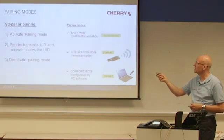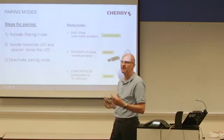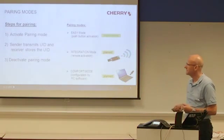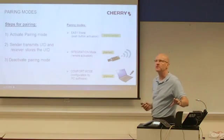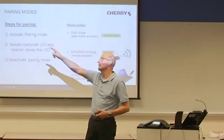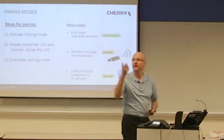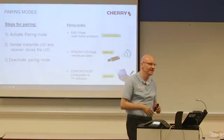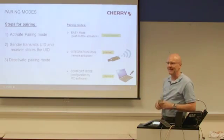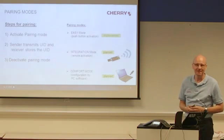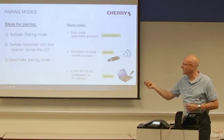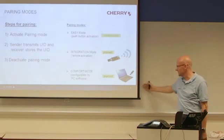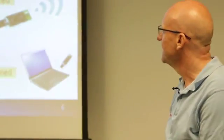The easiest way to activate the pairing mode is to put a switch on the receiver and press it — we call this 'easy mode': pairing by push button. But what if the receiver is placed behind a wall or in the ceiling and you cannot reach it to press a button? Then you need a way to activate the pairing mode without touching the receiver. We call this 'integration mode,' because the receiver is integrated behind a wall or in the ceiling. One option is a USB stick connected to a computer.